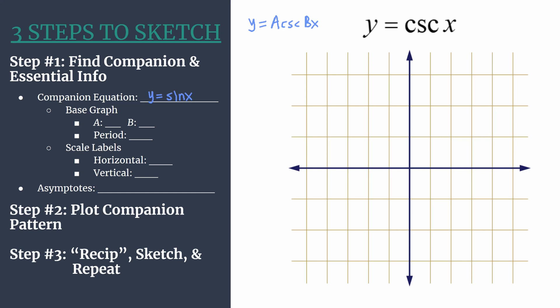Let's get some information about the base graph. The coefficient a is 1, so the amplitude of our sine companion graph will be 1. That's the distance from midline to max or midline to min. B, the coefficient of x, is also 1, so we have one cycle between 0 and 2π. Period is 2π divided by B for sine and cosecant graphs, so our period is simply 2π. Period is the length of a horizontal cycle.